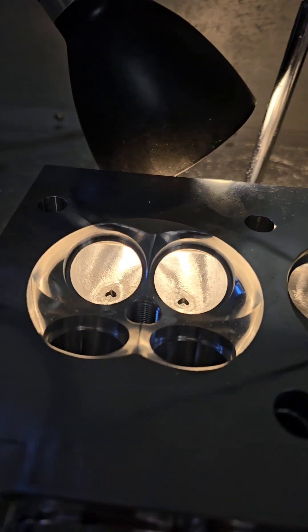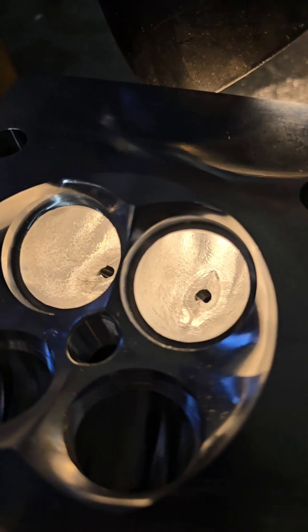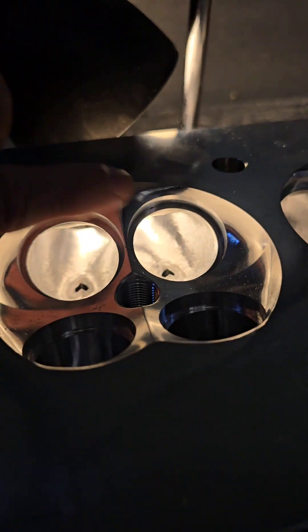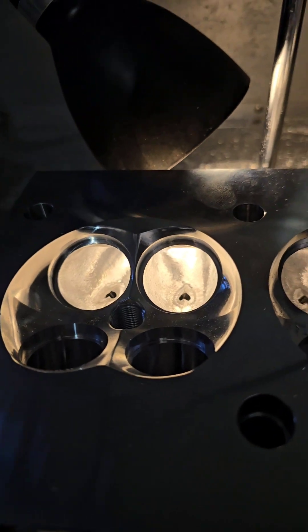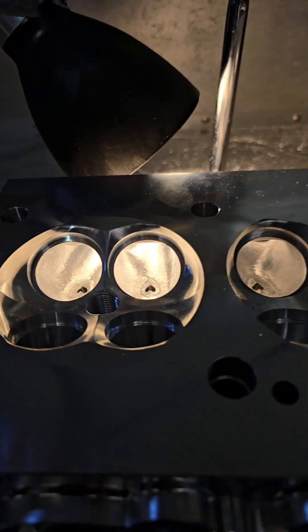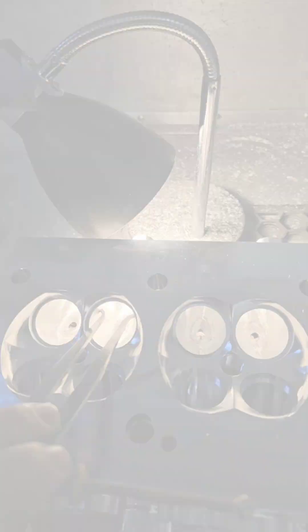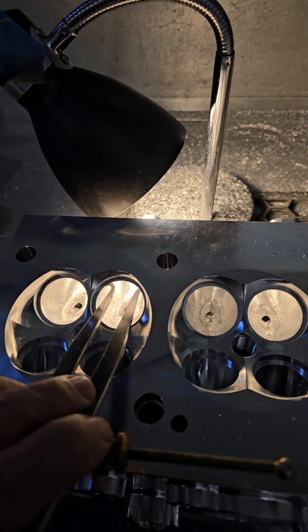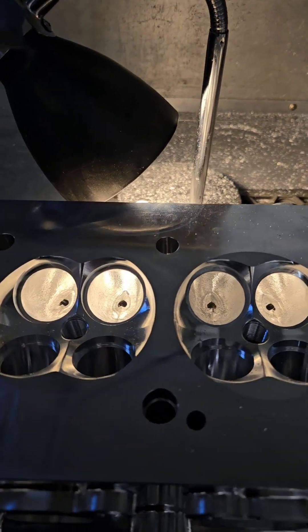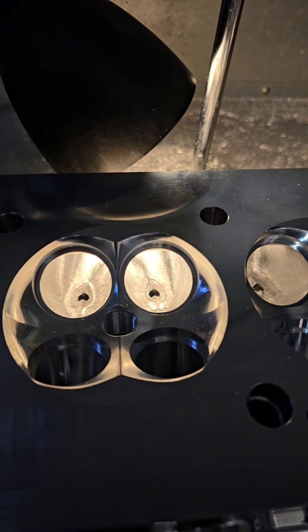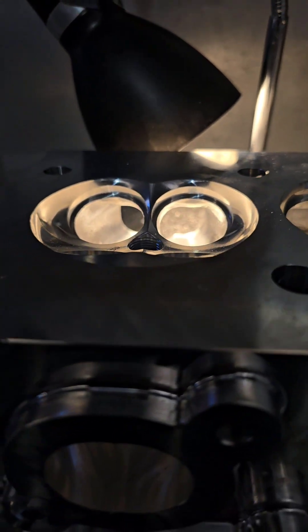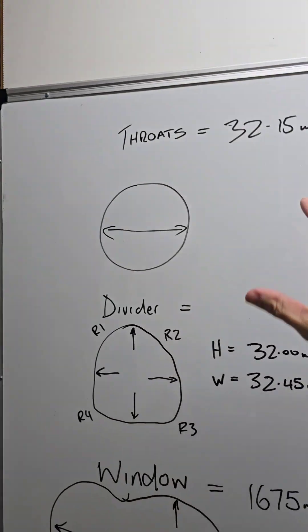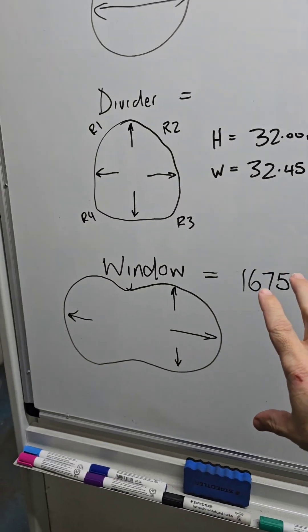We're on this side, we've done the bowls, we've cleaned all that area up. We've got a couple of little areas in here that we'll have to improve in version two. I'm going to show you how to measure it up — not bad. So we're going to write that up on the board and show you how to calculate the average CSA of a port. We've basically taken our throat size, our divider size, and we already know our window off our programming.